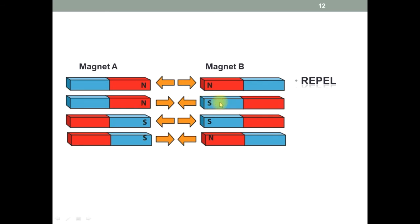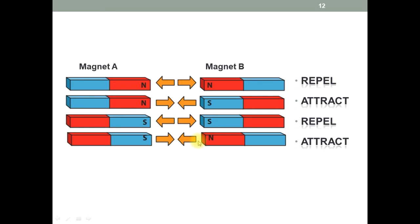When you bring the South pole of magnet B towards the North pole of magnet A, they will attract each other. When you bring the South pole of magnet B towards the South pole of magnet A, they will repel. When you bring the North pole of magnet B towards the South pole of magnet A, they will attract each other. You will observe that same poles repel each other while different poles attract each other.